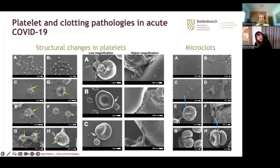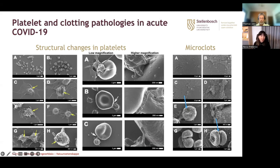Going back to acute COVID findings from the beginning of the pandemic: looking at these micrographs of platelets, red blood cells, and clotting pathology in acute COVID-19 patients, we saw severe platelet hyperactivation where platelets didn't have a normal structure as found in healthy individuals. They had significant interactions with red blood cells, attaching to them and forming complexes. We also found significant clotting pathologies related to microclots that actually glued the red blood cells together, as shown by the blue arrows.